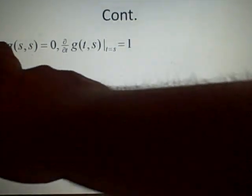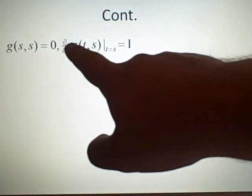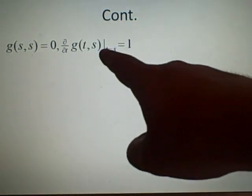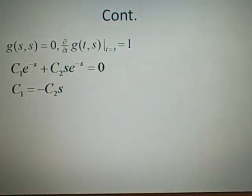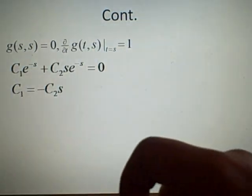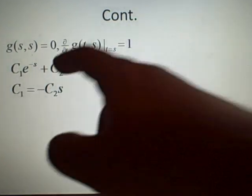So we're going to use the two facts we know, which is g(s,s) equals 0, and the derivative with respect to t of g(t,s) evaluated at t equals s equals 1. So if we put both as s, both the t's as s, and here as well, and then we can rearrange it and get C1 on its own to give minus C2 s.